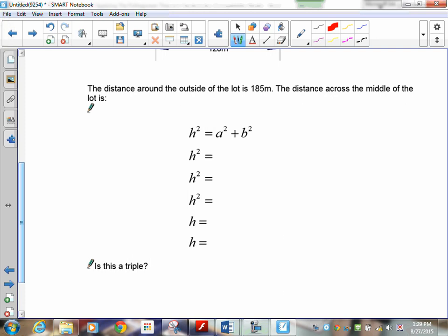First thing you have to do is do your substitution. h squared is going to be equal to 65 squared plus 120 squared. Now, you can have 120 squared plus 65 squared. It doesn't matter. The next one is 4,225 plus 14,400. And that gives us h squared is 18,625. That means that h is going to be the square root of 18,625.